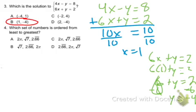So 2 times 3.14 gives us 6-something. So 2 pi is 6.28-something. And then we have 2.66 repeating. And then we have the square root of 7, which is between 2 and 3.